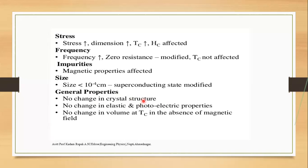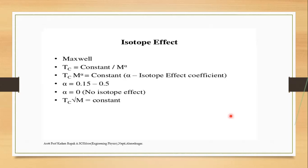General properties of superconductivity include: no change in crystalline structure, no change in elastic and photoelectric properties, and no change in volume at the critical temperature in the absence of a magnetic field. The isotopic effect (Maxwell): Tc = constant / M^α, where α is the isotopic effect coefficient with a value of 0.15 to 0.5.